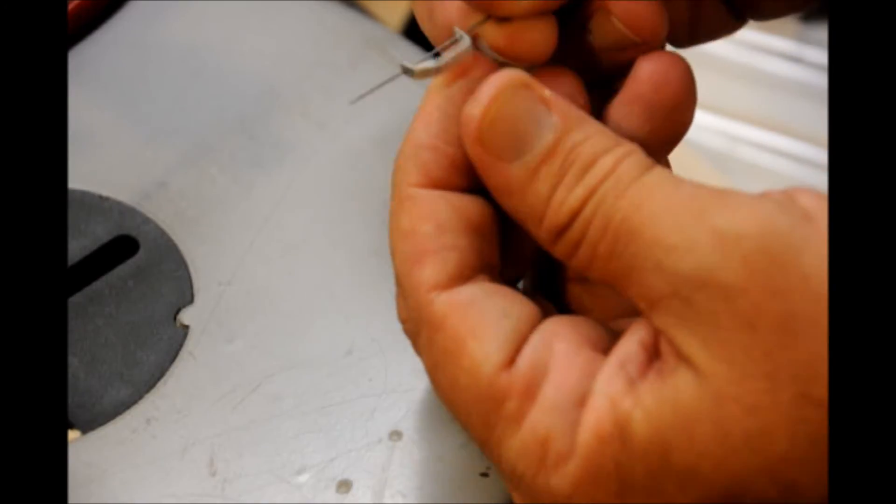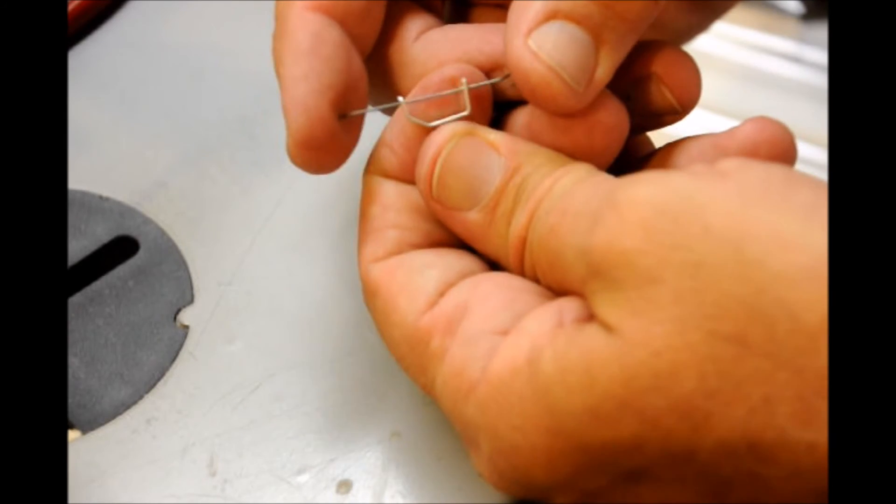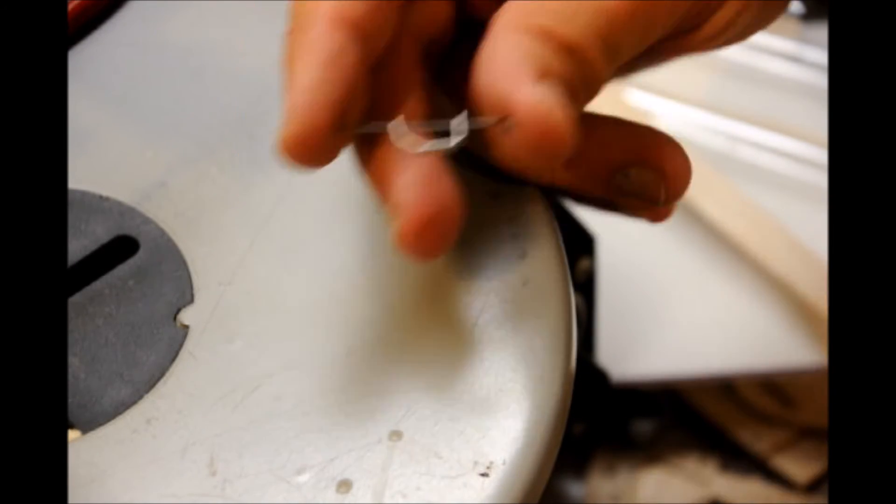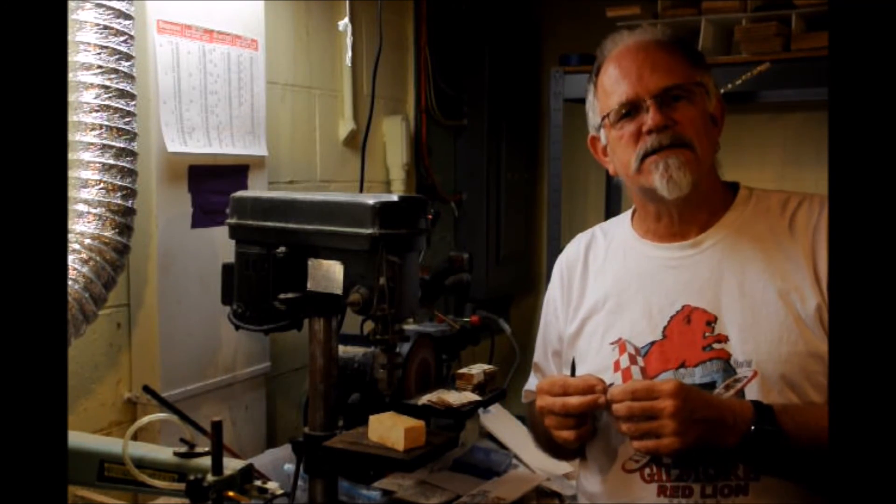And just to test everything out we take our 025 prop shaft and we put it in there. And that's how you make a no-cal nose bearing out of a piece of aluminum tubing.